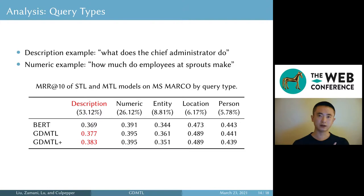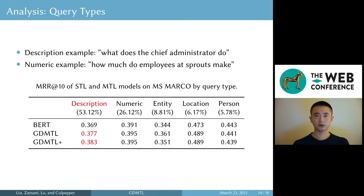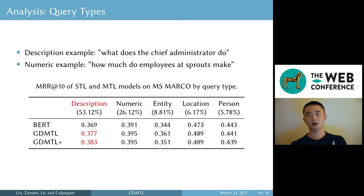But how exactly does generation help? In this table we did a breakdown analysis, dividing queries into different types using publicly available data. The most challenging type is description queries — we can imagine the answer must be a long description — while other types like numeric queries are relatively simpler. The table shows description queries benefit most from generation tasks, which is in line with our expectation, because generation tasks strengthen a model's text understanding ability, which translates into higher effectiveness.